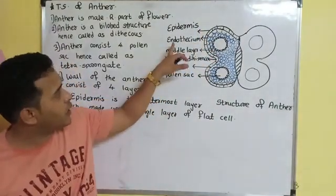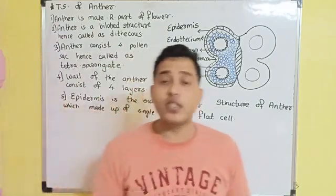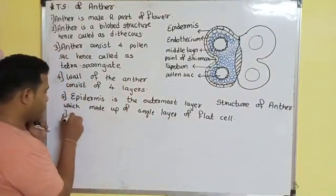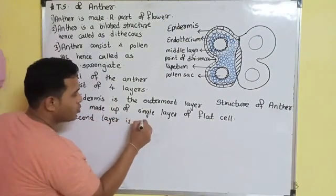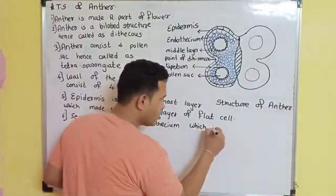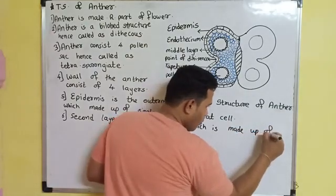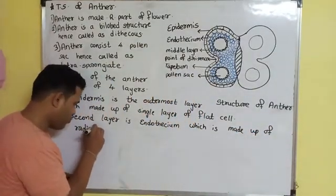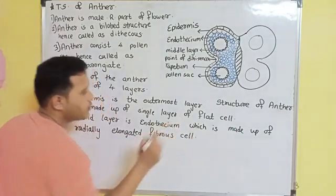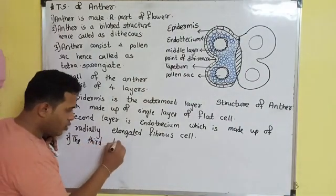The second layer is endothecium, just below the epidermis. Endothecium is the second layer which is made up of radially elongated fibrous cells, which provide rigid support to the anther.